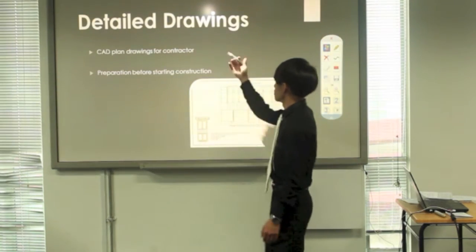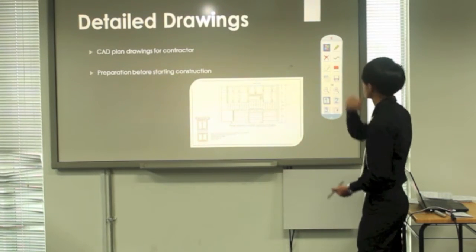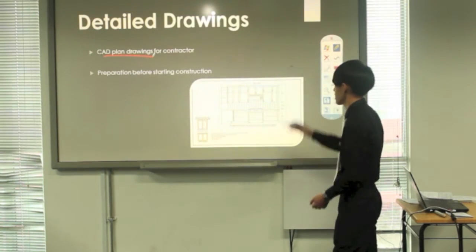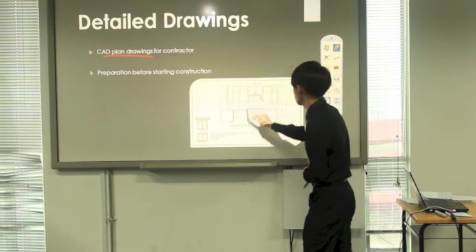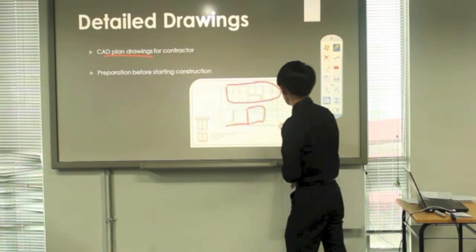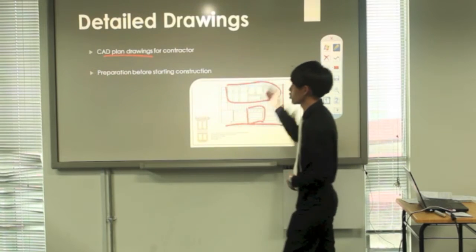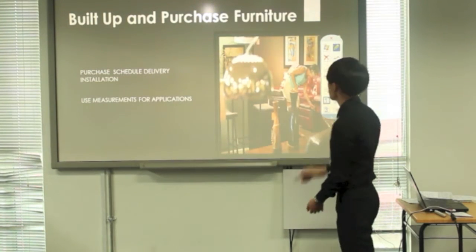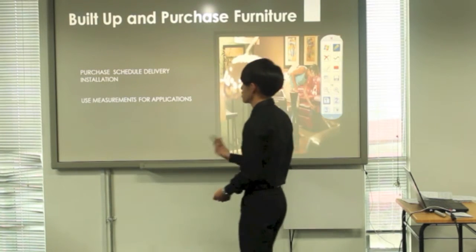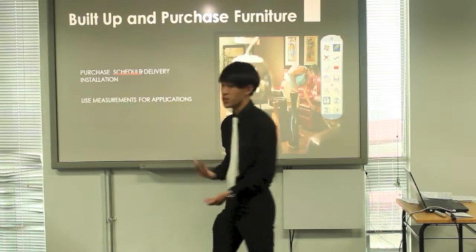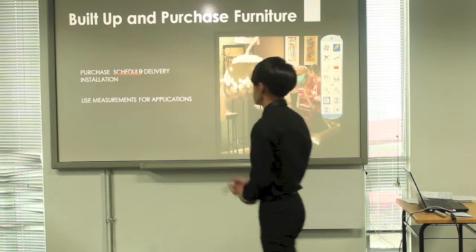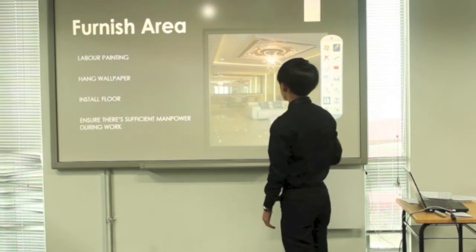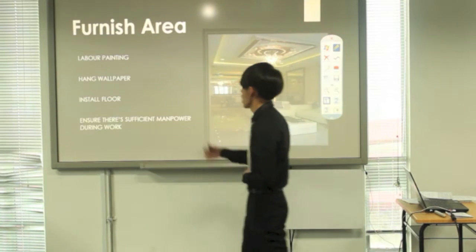After we start the contract, we will start the details of the drawing. First, the detail of the drawing is called the shop plan drawing. This is the example of shop plan drawing, and here is the example of the drawing of the kitchen. Here is the stove, here is the cupboard, and we need to consider about the width and height. After we have done the details of the drawing, we start the construction. After we start the construction, we start to build up and purchase the furniture. We need to ensure that the furniture that you purchase is delivered on time, and we need to start measurement of application.